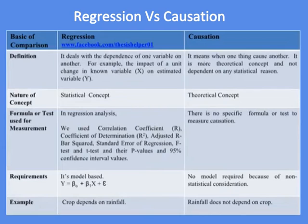An example of regression is that crop depends on rainfall, while an example of causation is that rainfall does not depend on crop.